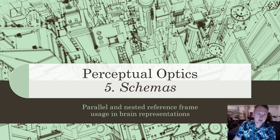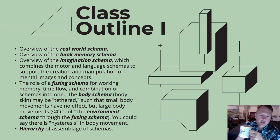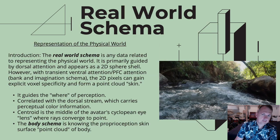Welcome to the fifth class on perceptual optics. This class is going to be on schemas. I would define a single schema as a grouping of brain information that shares a common realm, whether that's 2D or 3D information — in other words, all the information pertaining to the physical world or all the information pertaining to your imagination realm. Those would be two examples of schemas.